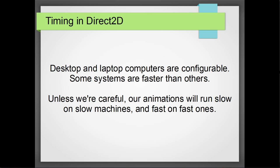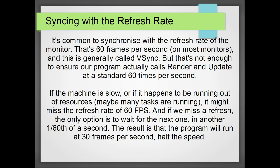Desktop and laptop computers — pretty much all computing devices — they all run at different speeds. So unless we're really careful, our animations are going to run at different speeds too. They'll be slow on slow machines and fast on fast ones. So that's no good. What we really want to do is have them run at the same speed on every machine.